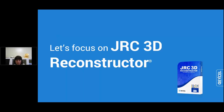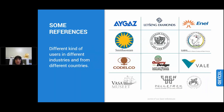Let's focus on the Jaxel infrastructure software. The software is largely used by different kinds of users, starting from private companies focused on engineering and construction applications, up to companies working in mining applications like St. Diamond — one of our open mine system users — up to organizations working in heritage applications, or research and universities as well. With Reconstructor you can really cover a wide application field.